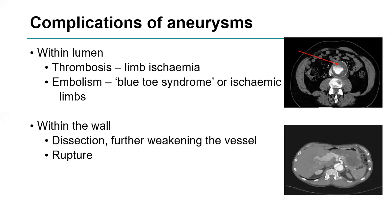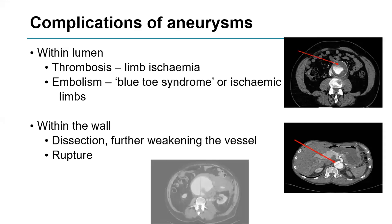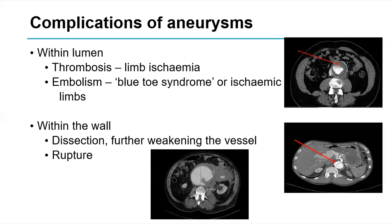Within the wall, we can get dissection — the arrow in the bottom right image points to the dissection flap. Dissection can further weaken the wall and typically causes pain. We can also get rupture: the bottom image with arrow points to extravasation of contrast from the lumen of the abdominal aortic aneurysm.